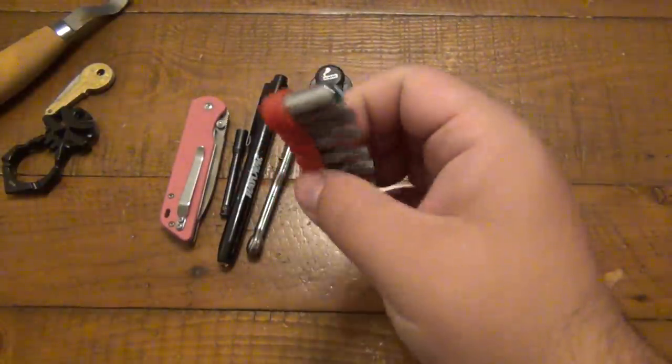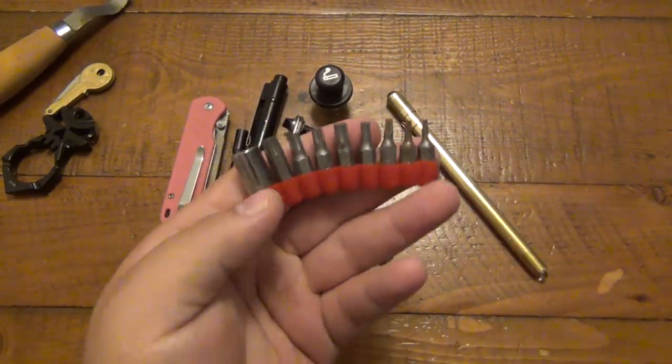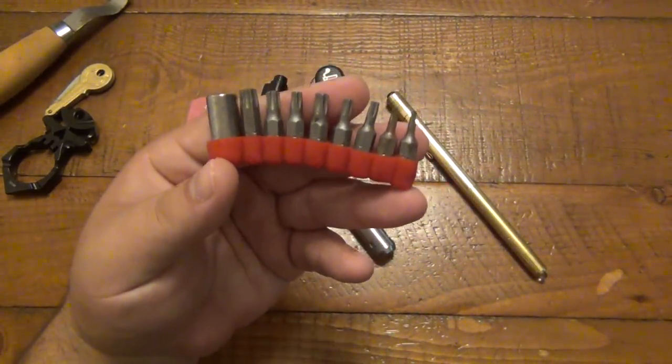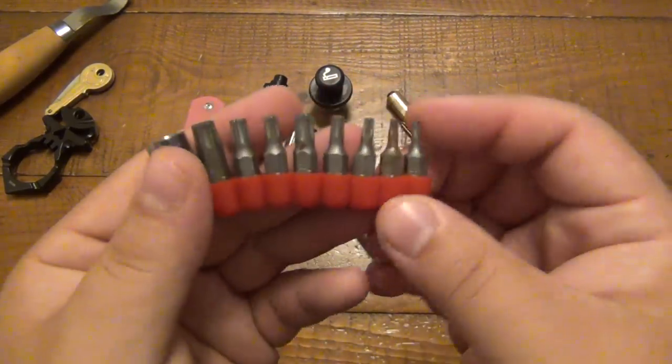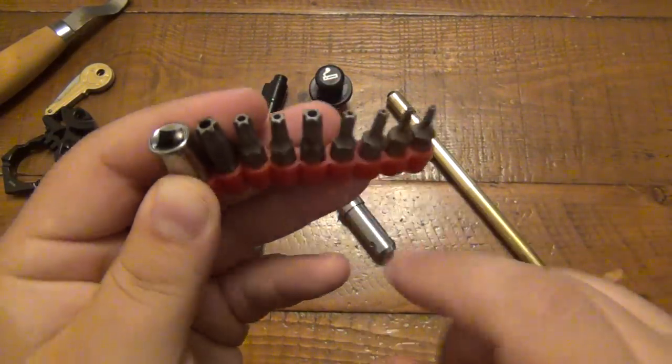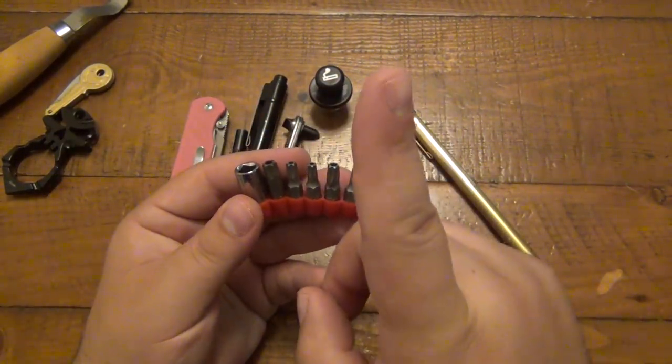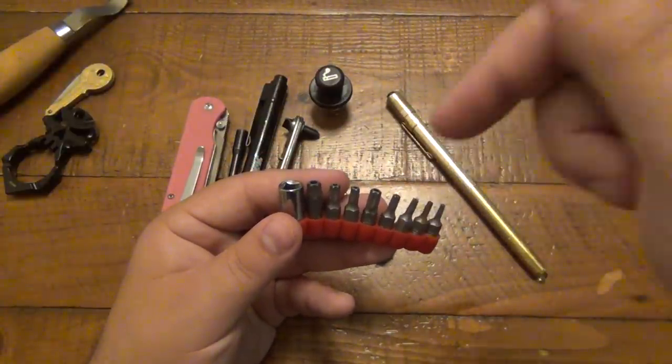Then I have a set of security torx bits. If you've ever had, I mean not necessarily in knives, it's kind of rare to see these in knives, but they do have them. That's originally why I got this. But basically they are torx bits that have a hollow center and that's because there's some torx heads that have a post in the middle. They're called security torx because you can't use a regular torx bit, it won't go in because of the post.